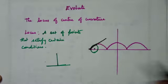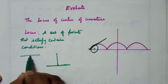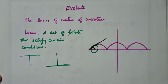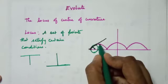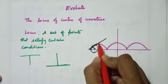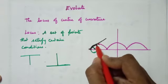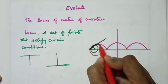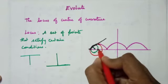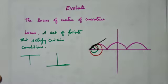At that tangent, there is also a normal. The normal is perpendicular to the tangent line — these two lines are perpendicular to each other. The center of curvature lies on this normal line.